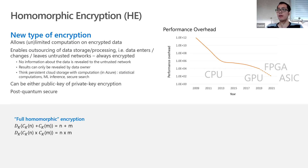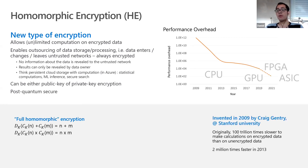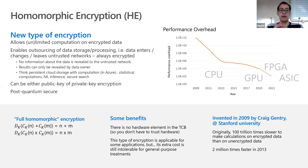This is a very secure scheme — it is quantum-secure, meaning even a quantum computer cannot break it currently. The idea started in the 1980s with RSA, but it was only about 10 years ago that someone first proved it was theoretically possible. Back then it was extremely inefficient, but as you can see from the graph, it's becoming more and more efficient. Unlike confidential computing, this is purely software — pure mathematics — so no special hardware is required. You can use it on your laptop.